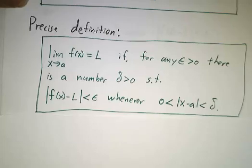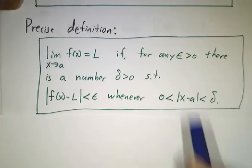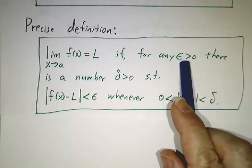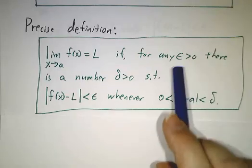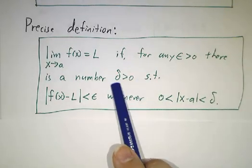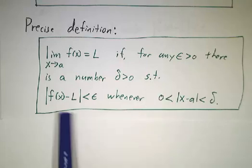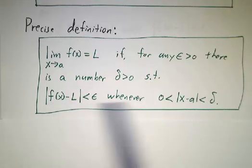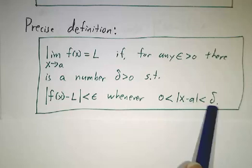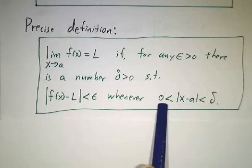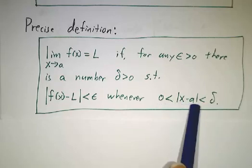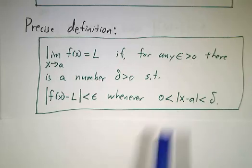So the precise definition is no matter what value of epsilon you give, that's how close you want f to be to L. There's a number delta, that's how close x has to be to a, such that f is within epsilon of L whenever x is within delta of a, but not equal to a. So the absolute value of x minus a is less than delta, but bigger than zero.